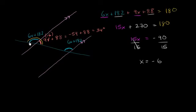The blue angle is 180 minus that, but we can verify by evaluating 6x plus 182. This equals 6 times negative 6, which is negative 36, plus 182.